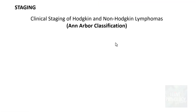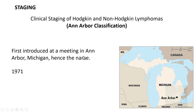Moving on to understanding the staging. Staging is basically important for us to understand the extent of the tumor. In the context of Hodgkin Lymphoma or even non-Hodgkin Lymphoma, the staging used is the Ann Arbor Classification. This was first introduced at a meeting in Ann Arbor, a city in Michigan, USA, in 1971, and it still holds good for Hodgkin as well as non-Hodgkin Lymphomas.